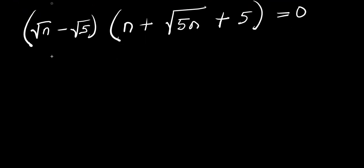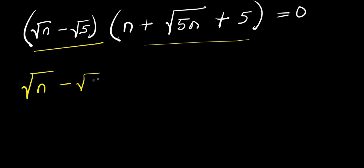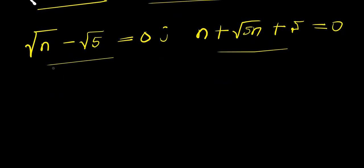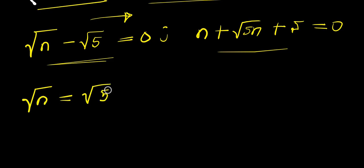We equate each factor to zero. From the first factor, square root of n minus square root of 5 equals 0, so square root of n equals square root of 5. Squaring both sides gives us n equals 5. That is our first solution, n₁ equals 5.